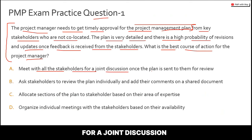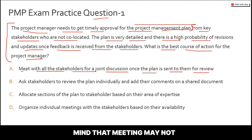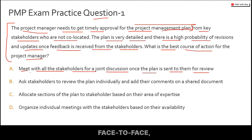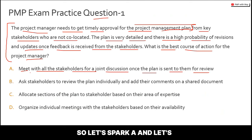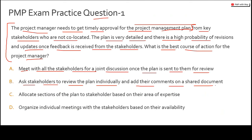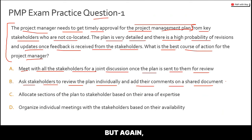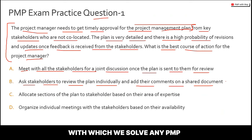Option A: Meet with all the stakeholders for a joint discussion once the plan is sent to them for review. This could be a possible option — keep in mind meetings can be virtual, not just face-to-face, so do not assume face-to-face if not mentioned. Option B: Ask stakeholders to review the plan individually and add their comments on a shared document. This can also be a way to collect feedback, but let's park both options and look at C and D first.